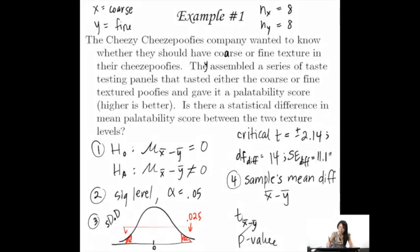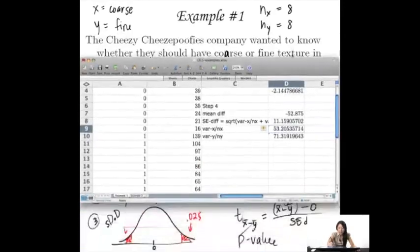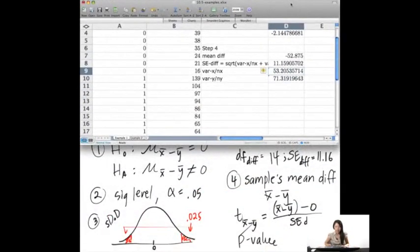And so in order to find this t, we need to have this difference, the difference between the means, minus 0, and that's like nothing, over the standard error of the difference. And so we could easily do that now.